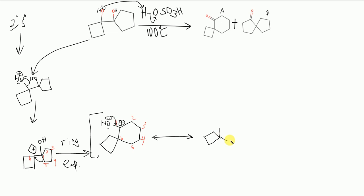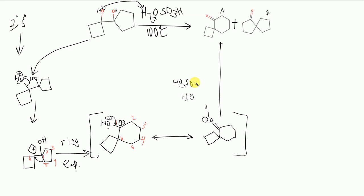For product B, the mechanism is the same sequence but starting by protonating the other alcohol instead. The same ring expansion logic applies — we just begin from the opposite oxygen, leading to the alternate product.